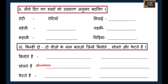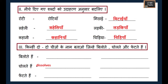The next exercise says 'Neeche diye gaye shabda ko utaran anusar badliye' — change the words from singular to plural. For example: roti becomes rotiyaan, saheli becomes saheliyaan, kahaani becomes kahaaniyaan (meaning stories), mitai becomes mitaiyaan (sweet/sweets), ladki becomes ladkiyaan (girl/girls), chidiya becomes chidiyaan.